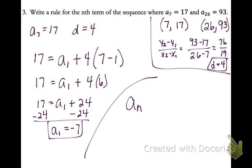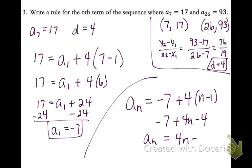Now I need to write my final rule. So I get a sub n equals negative 7 plus 4 times n minus 1. Distribute the 4 and combine like terms. And there's my rule.